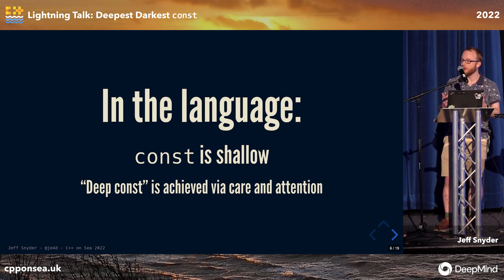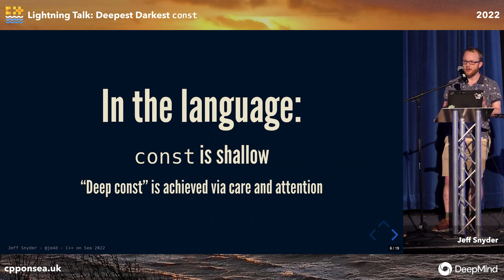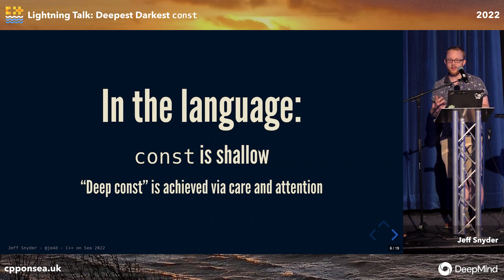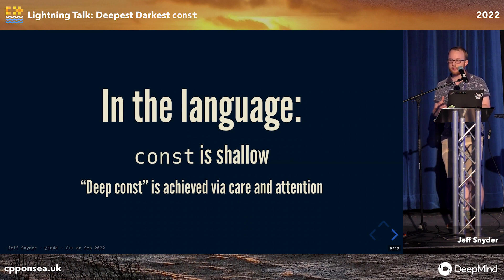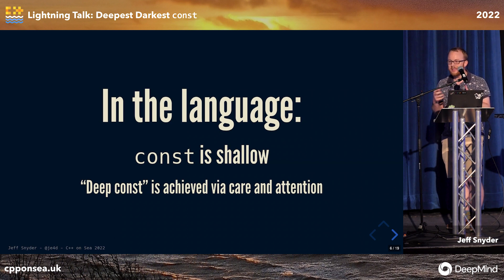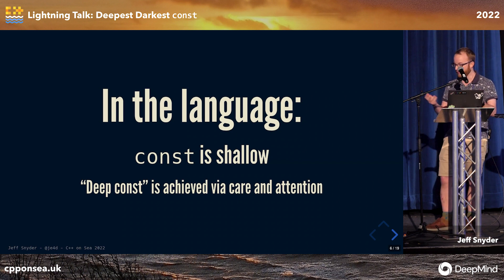In the language, the keyword const gives you shallow constness, and we achieve deep constness via a lot of care. We have to make sure that when you're writing a class like vector, you basically don't ever leak a mutable pointer into the data from any const function, or you've lost all the deep const guarantees.